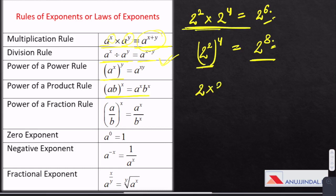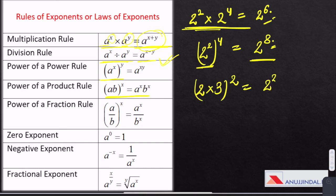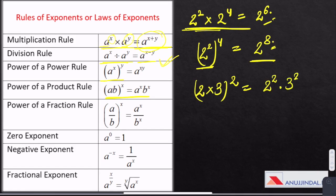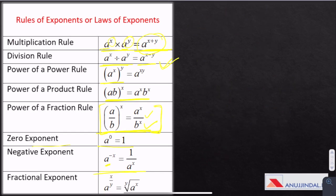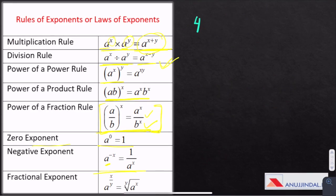Product rule: 2 into 3 to the power 2 could be written as 2 square multiplied by 3 square. Power of a fraction rule: we can individually give the power to denominator and numerator. Zero exponent: 2 to the power 0 is 1. For negative power: 4 to the power minus 2 is written as 1 divided by 4 to the power 2. Or 8 to the power minus x equals 1 by 8 to the power x.